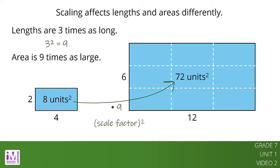We can see that the large rectangle could be covered by 9 copies of the smaller rectangle, without any gaps or overlaps. Lengths are one-dimensional, so in a scaled copy, they change by the scale factor. Area is two-dimensional, so it changes by the square of the scale factor.